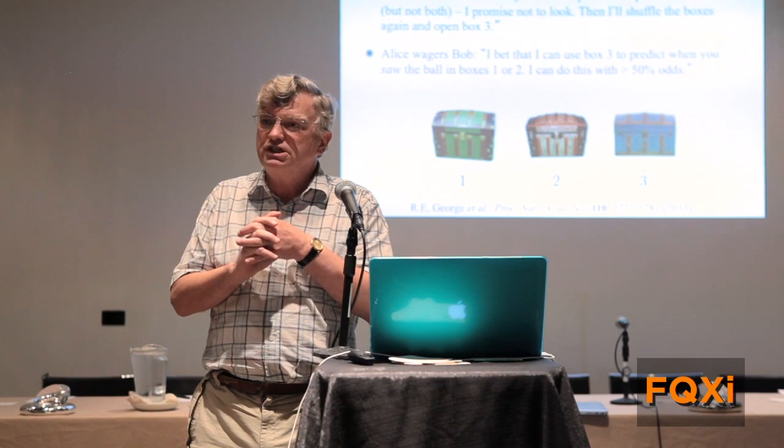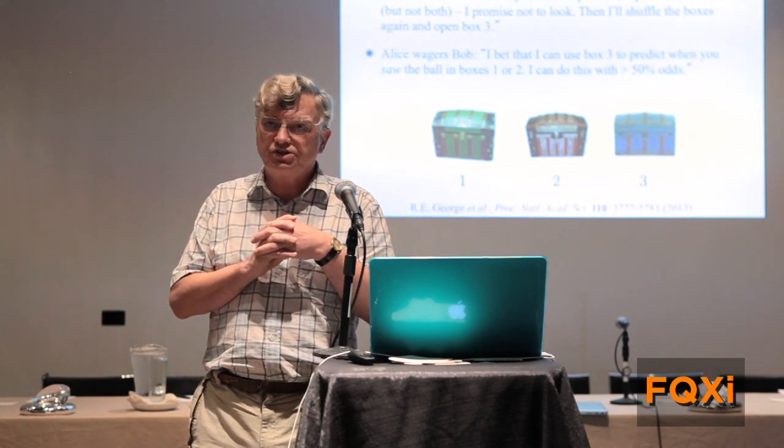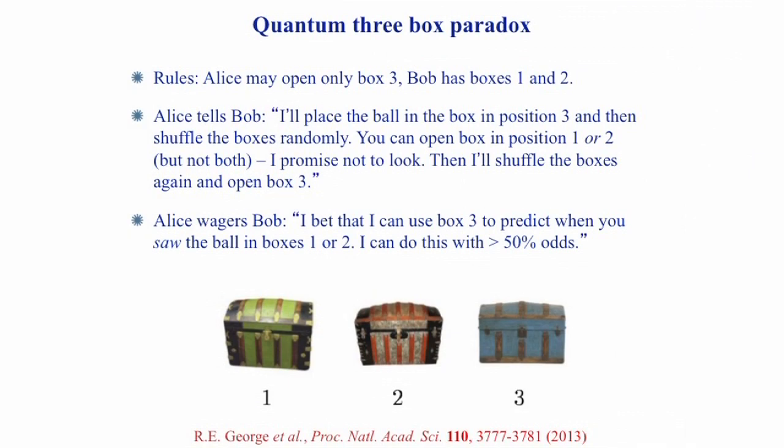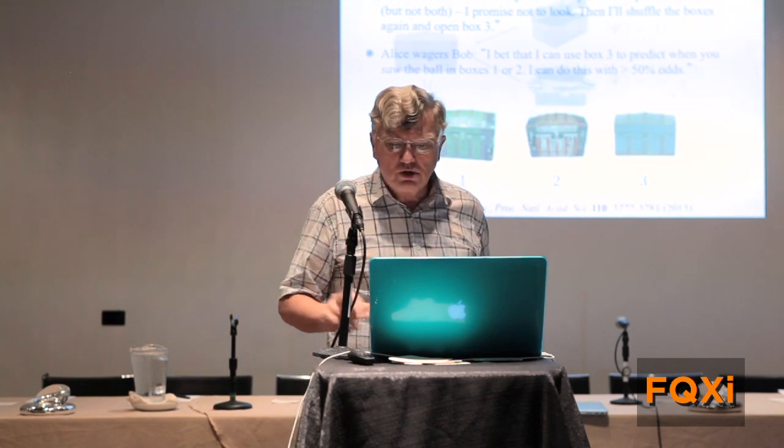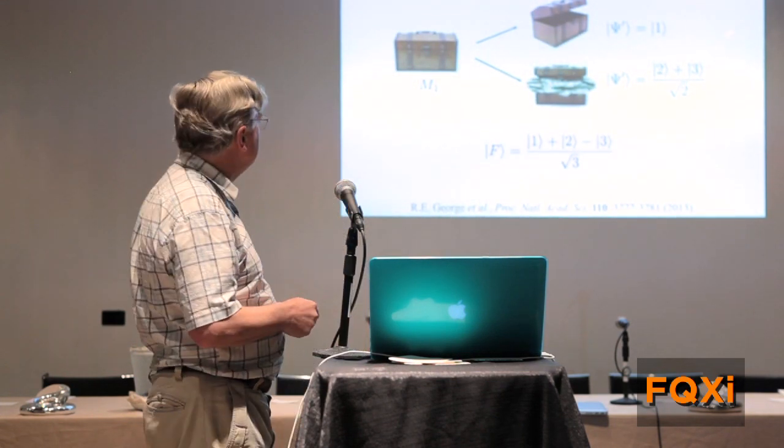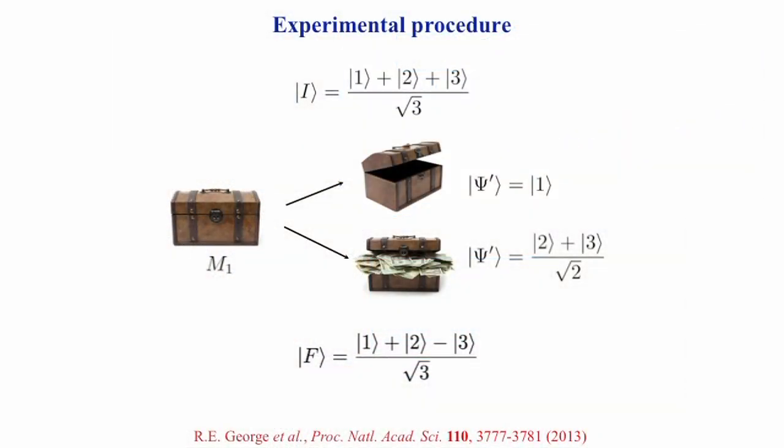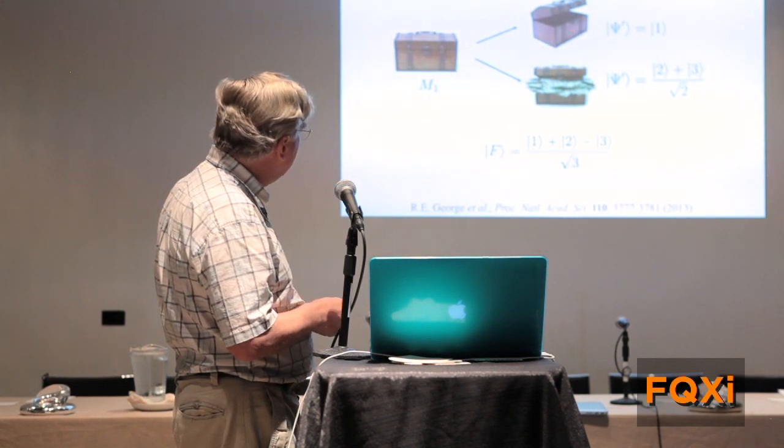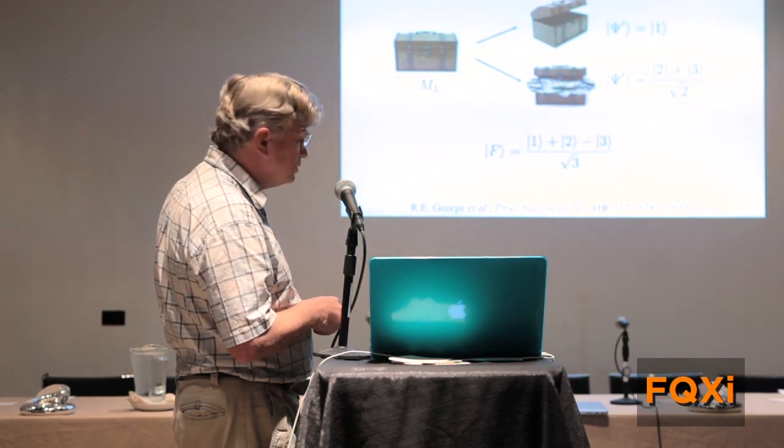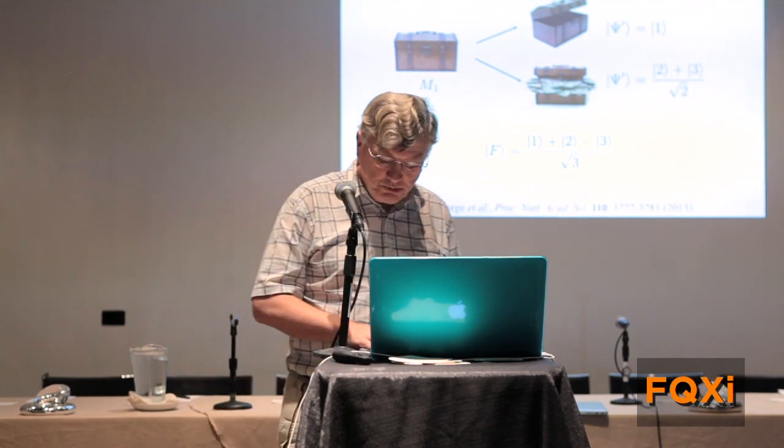Bob, on his classical reasoning, thinks, well, the best Alice could ever do is get it right half the time. Alice offers him better than 50% odds. Bob accepts, and to his astonishment, in a perfect game, he finds that Alice wins every game that she accepts. The quantum theory of this, I'm just giving you a simple account, is that Alice initializes on this state. She post-selects on that state. And you can imagine that if Bob does not see a ball when he looks in box one, then you've got that state, which gives Alice a zero when she looks at this state.